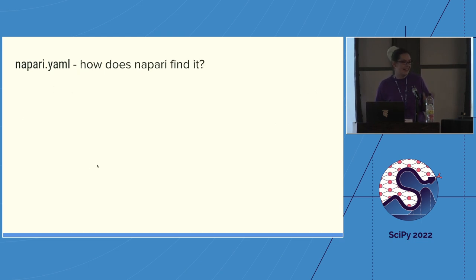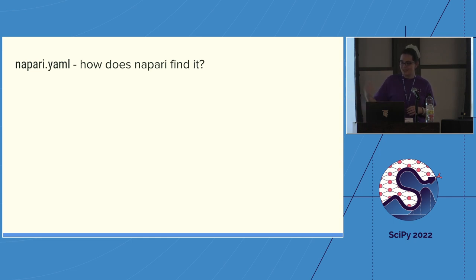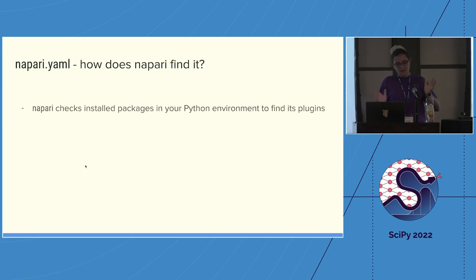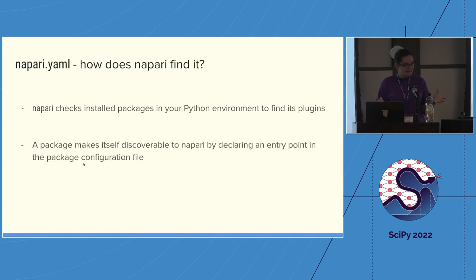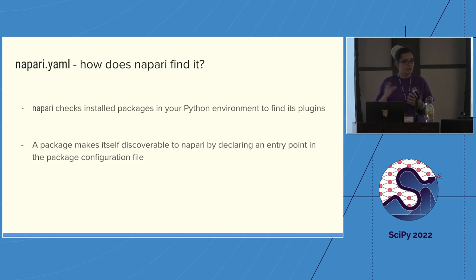There's a bit more — you also need to make your package discoverable to Napari. Napari checks all installed packages in your Python environment to find things that advertise themselves as plugins. A package makes itself discoverable by declaring an entry point in the package configuration file. If this sounds like gibberish, the cookie cutter template ties all of this together for you — you don't need to be a packaging expert.